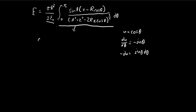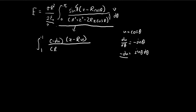Rewriting this integral — I'm going to ignore the constants for now and focus on solving the integral. For the bounds, cosine of 0 is equal to 1, and cosine of pi is equal to negative 1. Sine theta times d theta is equal to negative du. Rewriting the rest, we have z minus ru in the numerator, and r squared plus z squared minus 2rzu to the power of 3 over 2 in the denominator. We can get rid of the negative sign by flipping the bounds of the interval, so it goes from negative 1 to 1.